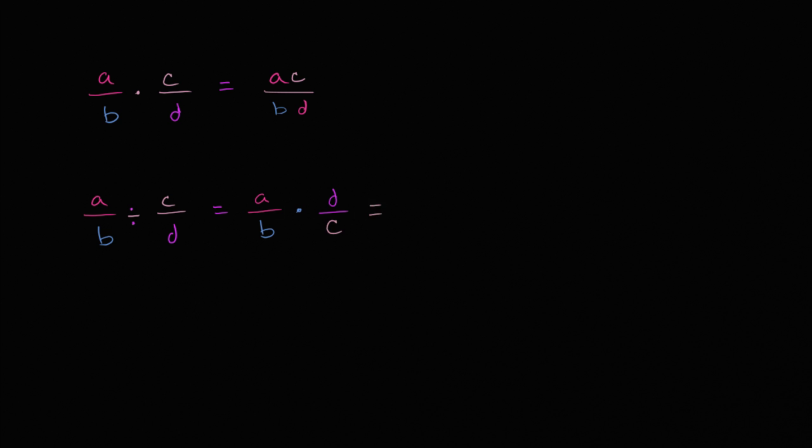Well, in the numerator, you're going to have a times d. So it's ad over bc, over b times c.